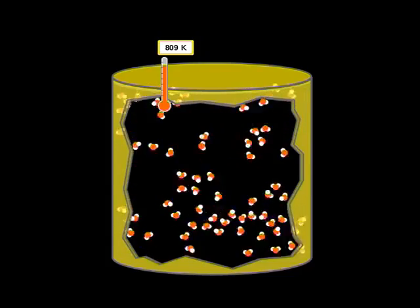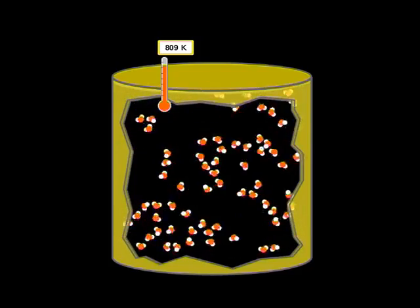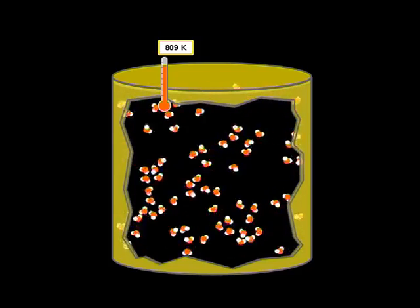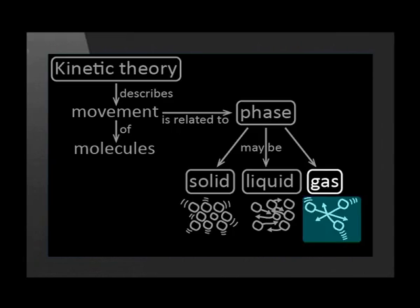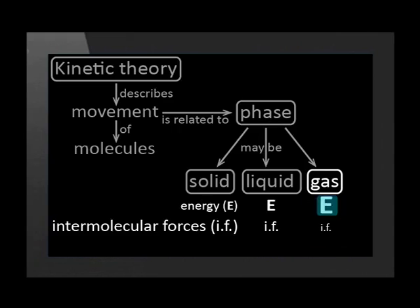Here is a microscopic representation of water vapor. The particles jump around freely and fill their container. Gas particles jump around because they have a lot of energy and very weak intermolecular forces. Actually, in ideal gas theory, they have no intermolecular forces at all.